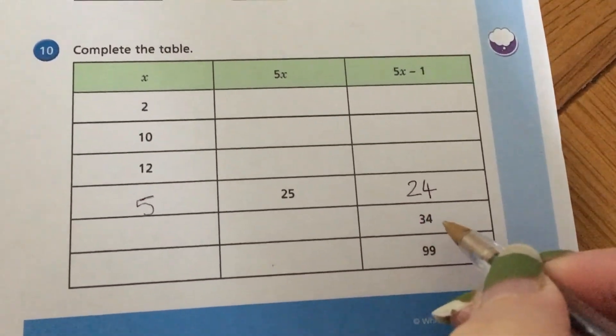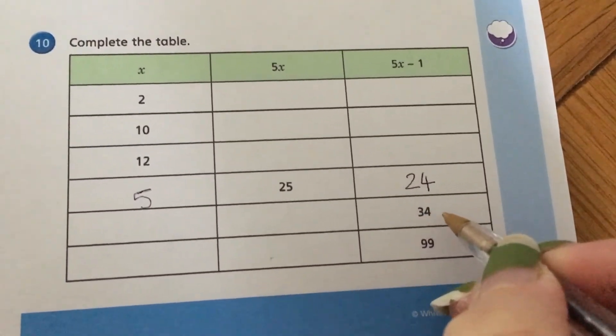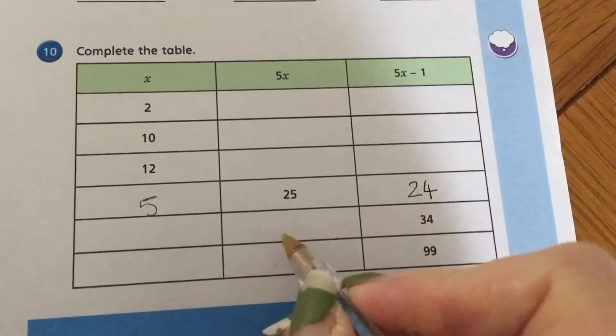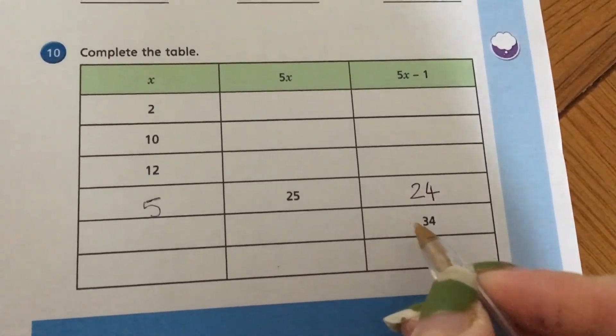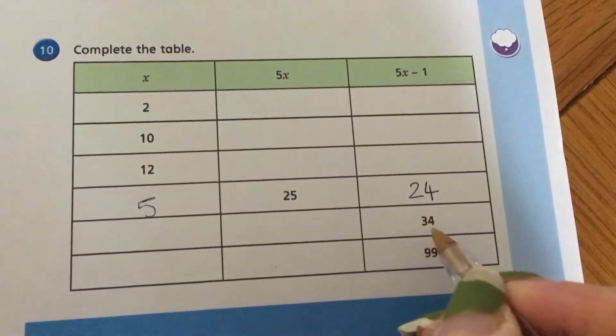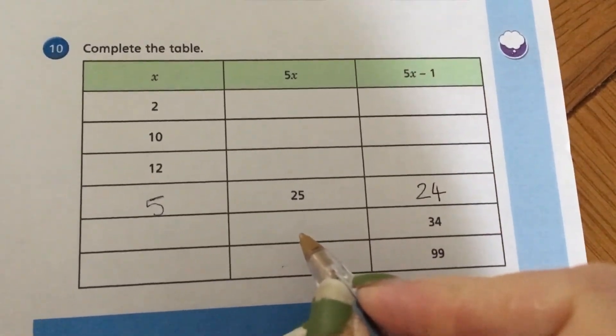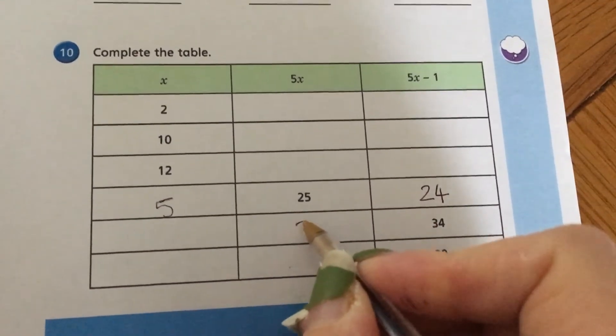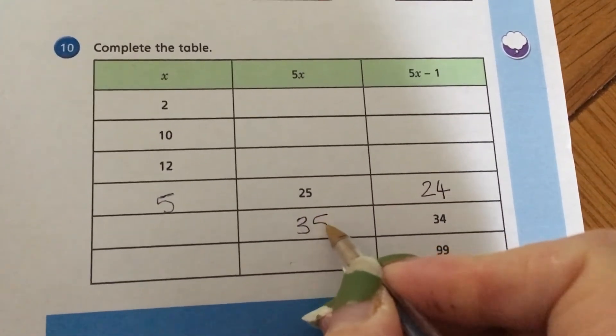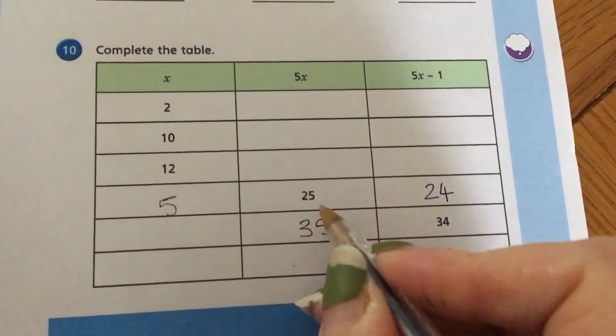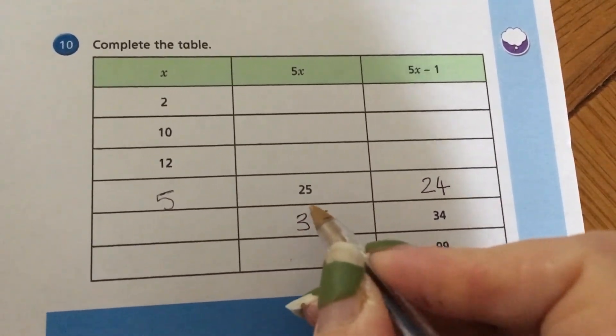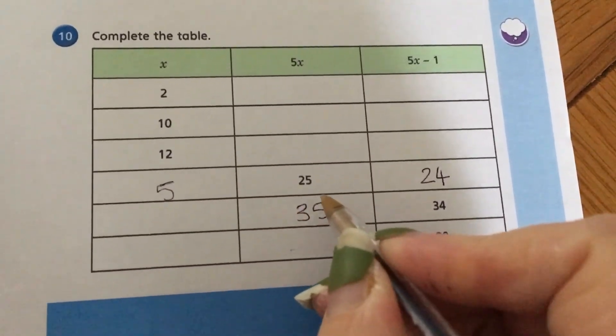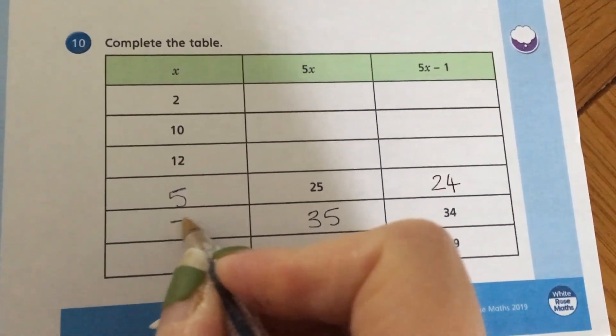Here, we've got what 5x take away 1 is. So if I'm wanting to know what 5x is, rather than, we've got 5x take away 1, rather than take away 1, again, I've got to do the inverse. So the inverse of subtraction is addition, so I've got to add 1, so that gives me 35. And just like before, 5 lots of x, I've got to divide by 5 to give me the answer 7.